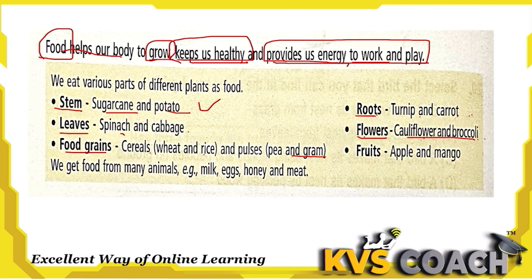We also get food from animals — for example, milk, honey, and meat. Fruits like apple and mango are also eaten as food. So these are the different types of food which we get from plants and animals.